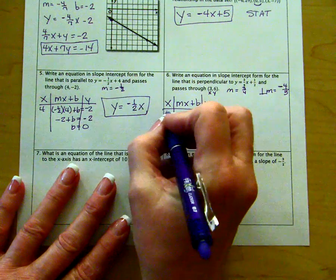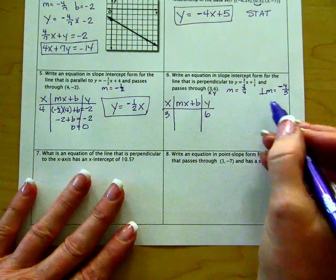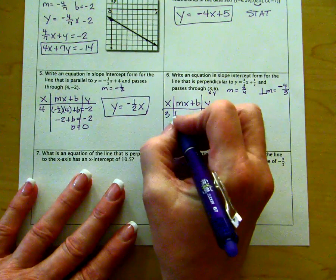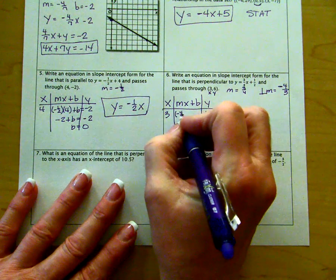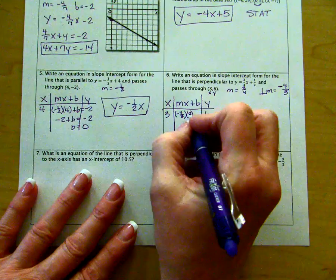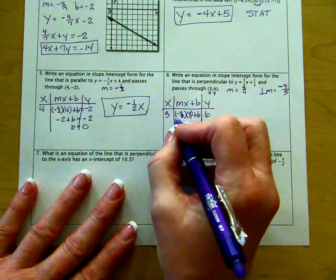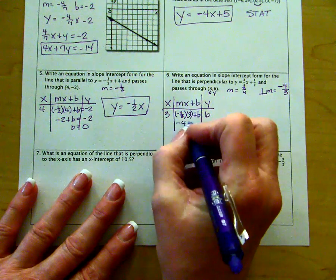Our x is three, our y is six. The slope we need to use is negative four over three. Our x again is three. Negative four-thirds times three is negative four.